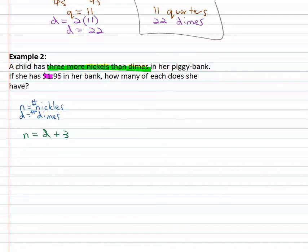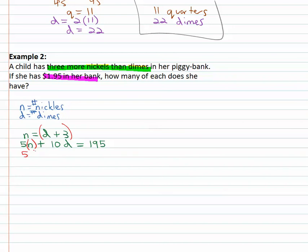The next part says she has one ninety-five in the bank — that's the value. For each nickel she gets a value of five cents, and for each dime she gets a value of ten cents. Adding those values together gives one hundred ninety-five cents. Notice I match the units all the way across — everything is in cents. We can solve this by substitution since we know what N equals: N equals D plus three, so we replace N and get five times D plus three plus ten D equals one ninety-five.